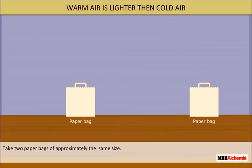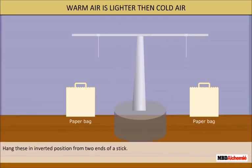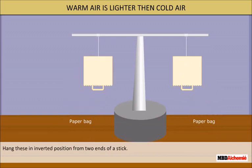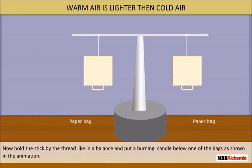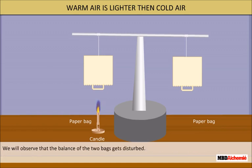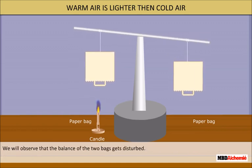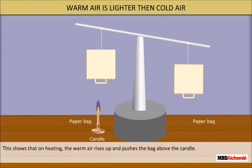Take two paper bags of approximately the same size. Hang these in an inverted position on the two ends of a stick. Tie the stick in the middle with a thread. Hold the stick by the thread like a balance and put a burning candle below one of the bags. We will observe that the balance of the two bags is disturbed. This shows that on heating, the warm air rises up and pushes the bag above the candle. From this, we conclude that warm air is lighter than cold air.